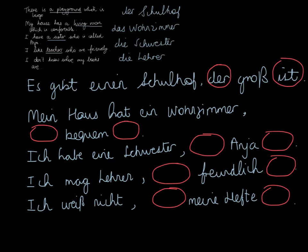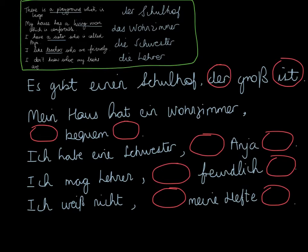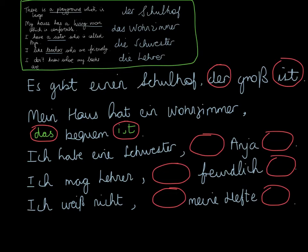Now you can almost predict what is going to happen with the rest of the sentences. Let's take you back to the English sentences at the top. Remember we've already decided whether the words in front of which and who are masculine, feminine, neuter, or plural. So let's go to our second sentence: Mein Haus hat ein Wohnzimmer, which is comfortable. The relative pronoun I need to use here is going to be das, because Wohnzimmer is neuter.